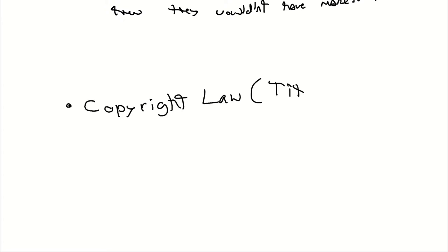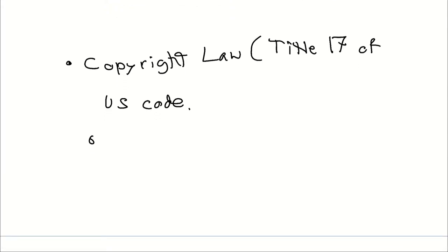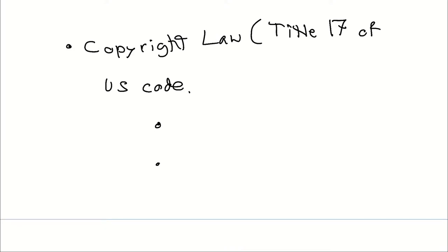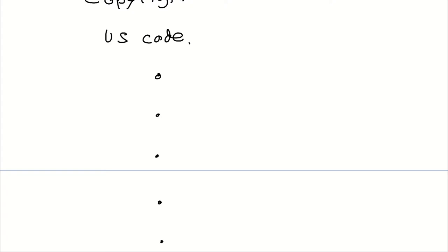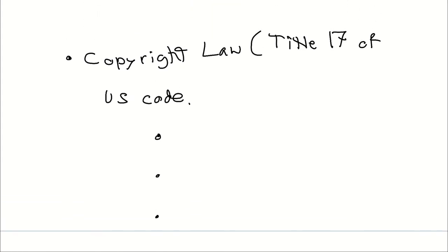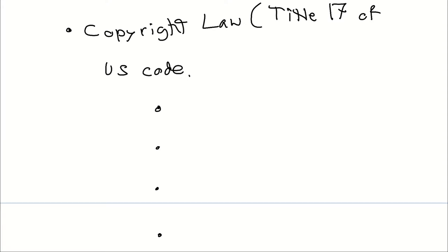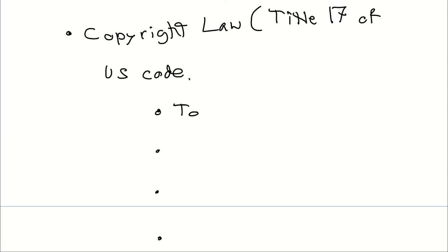Copyright law is actually Title 17 of the US Code, and it gives the following exclusive rights. Exclusive meaning they belong solely to the copyright holder — the person claiming rights to the idea. So it's giving you the right to make copies — whether of a vaccine, a book, a program, a movie, a photo, or a painting.